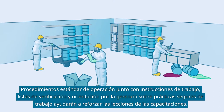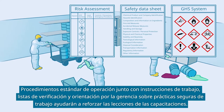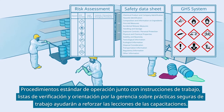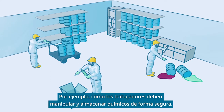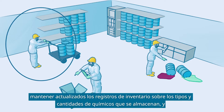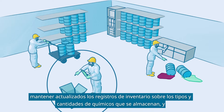Standard operating procedures, work instructions, checklists, and guidance by management on safe work practices will help to reinforce the training lessons. For example, how workers should safely handle and store chemicals. Maintain updated inventory records on types and amounts of chemicals being stored, and respond to emergencies such as a leak or spillage.